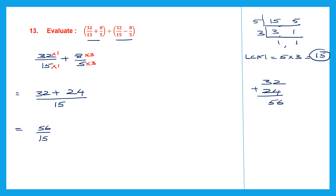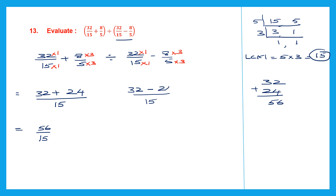We have finished the first bracket. Now the second bracket: 32 by 15 minus 8 by 5. The denominators are 15 and 5, so the LCM is again 15. Writing 15 as the common denominator: 32 into 1 is 32, and 8 into 3 is 24, but this time it's subtraction. So 32 minus 24 — borrowing: 12 minus 4 is 8. So we get 8 by 15.